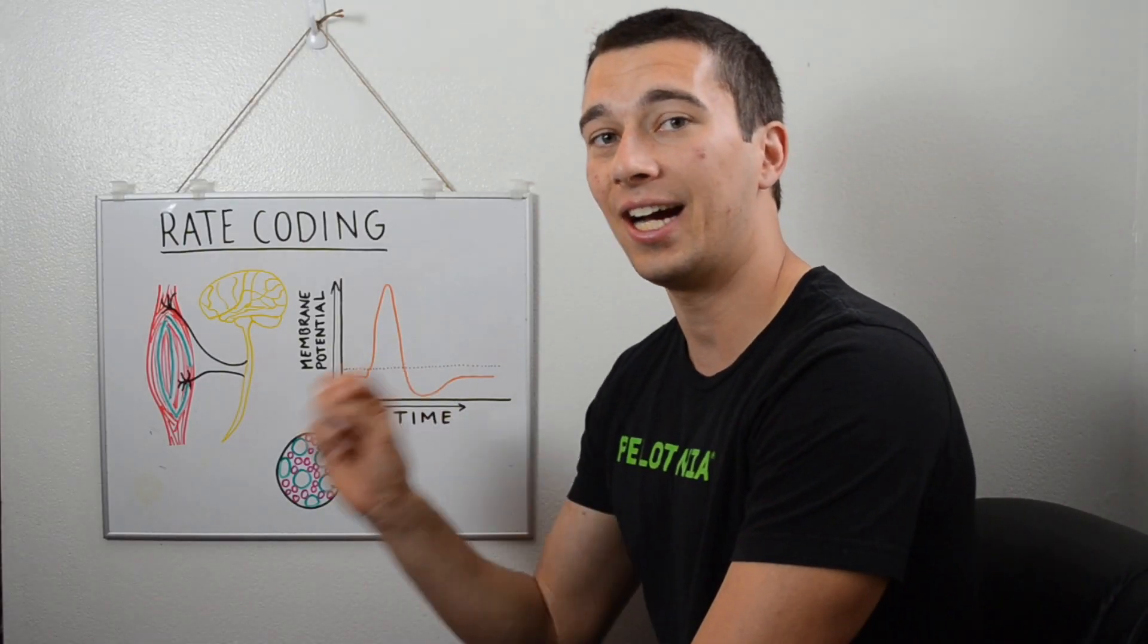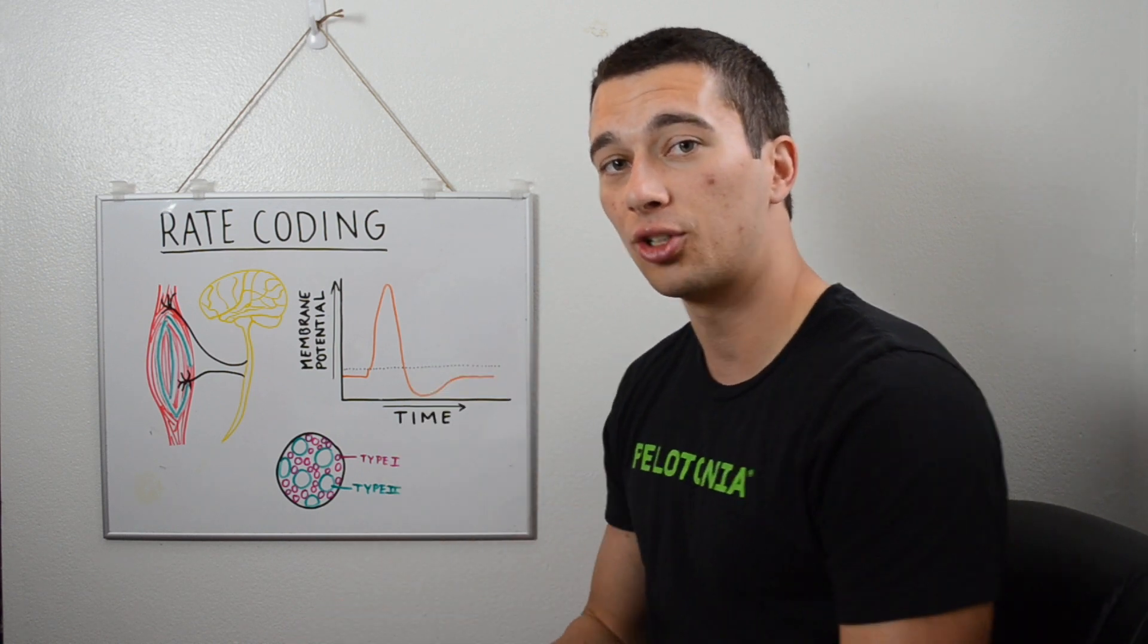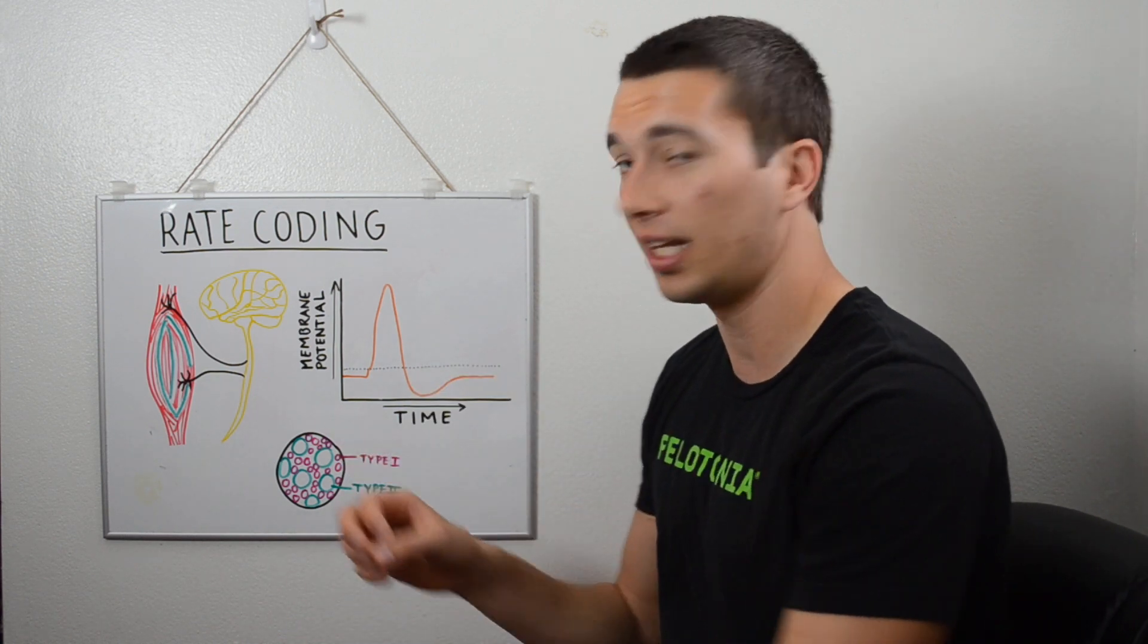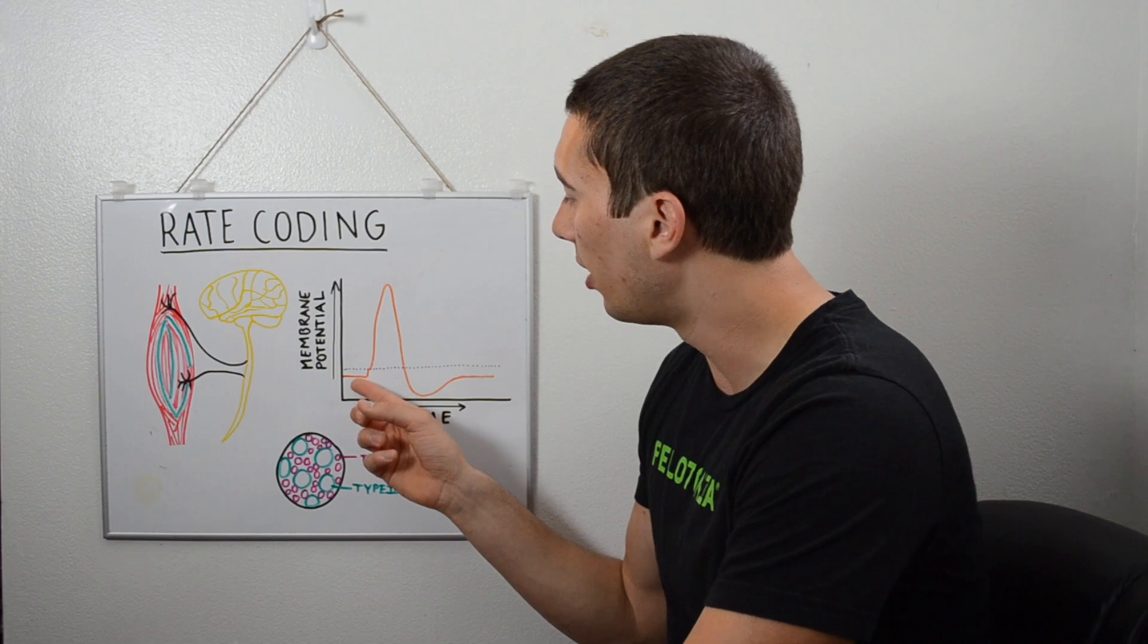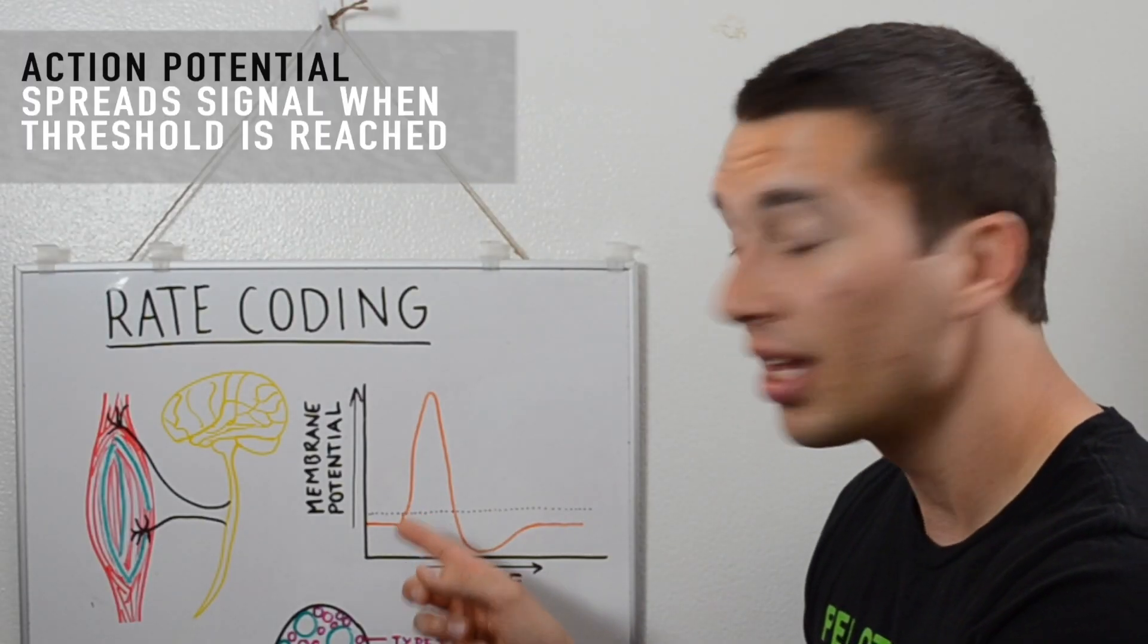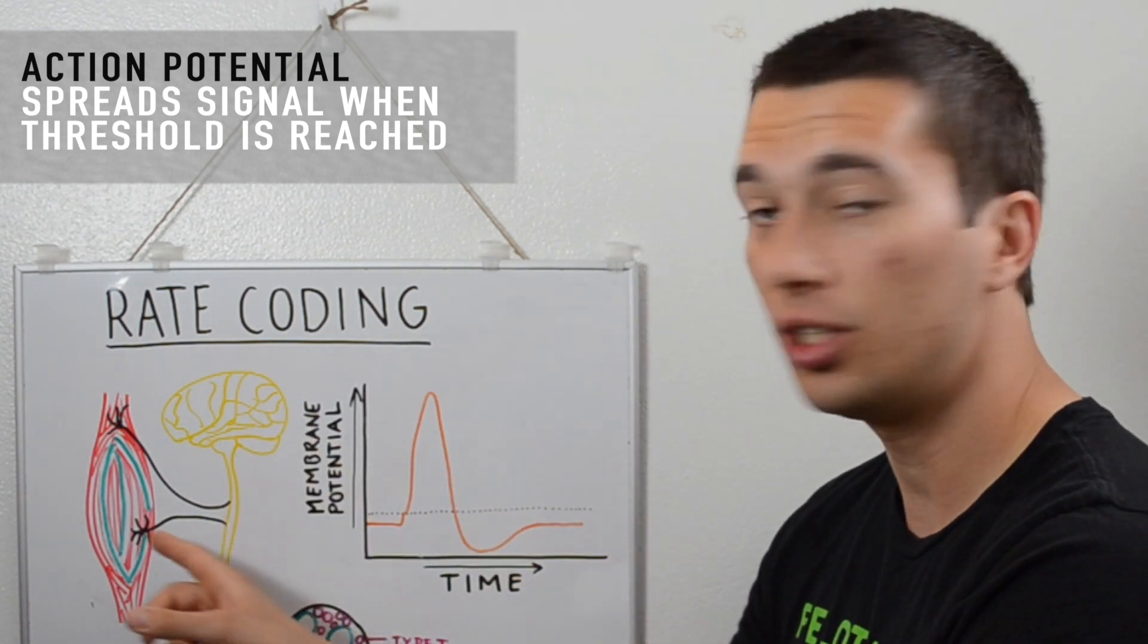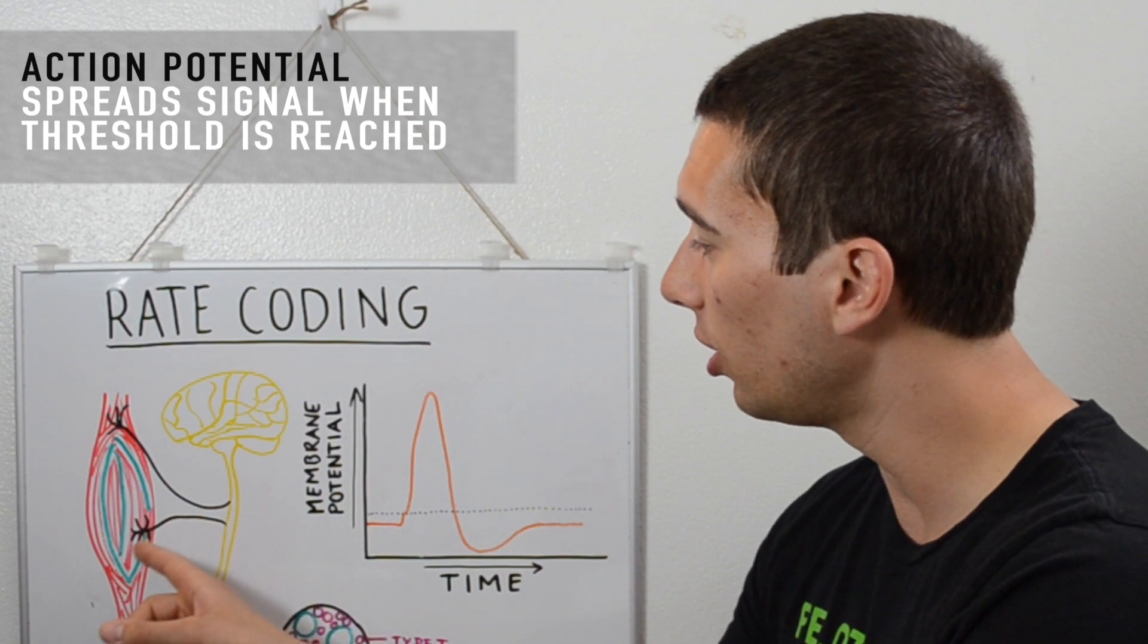And then as we create an action potential by moving the ions through a membrane, whenever an electrical signal goes across that membrane it allows for that movement of ions. We can basically reach a threshold here, this dotted line, which is going to signal an action potential to move down the nerve through the spinal cord, through the nerve to the muscle.